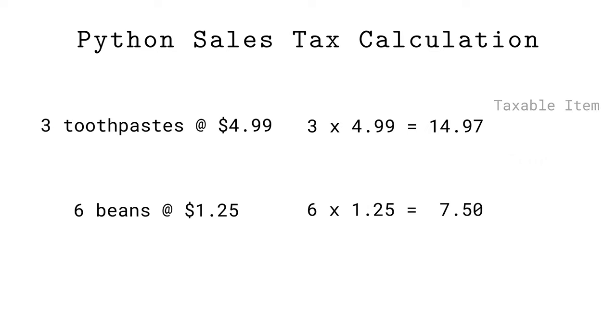The total charge will include taxes on the toothpaste subtotal, here using 6.5% as an example, but not on the beans. The total for this purchase is $23.44, including the tax on the toothpaste portion.